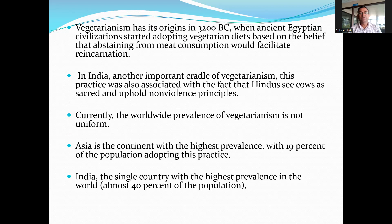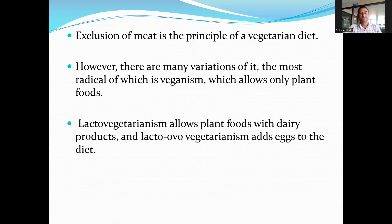Currently, the worldwide prevalence of vegetarianism is not uniform, but Asia has the highest prevalence, and among Asian countries, India has the highest prevalence — approximately 40% of the population is vegetarian. The exclusion of meat is the principle of a vegetarian diet; however, there are many variations. The most radical is veganism, which allows only plant food. Lacto-veganism allows plant foods along with dairy products, while lacto-ovo-veganism adds eggs to the diet.